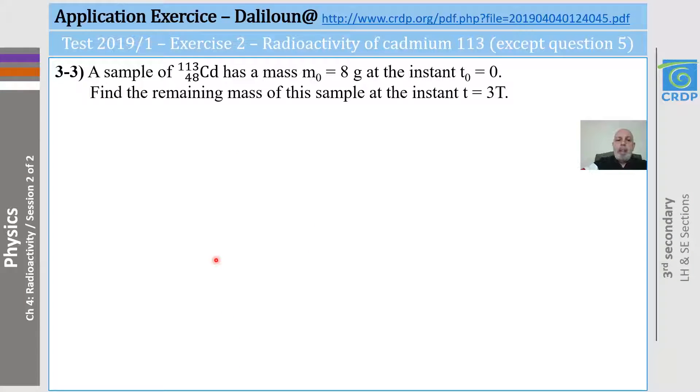Now, a sample of CD-113 has a mass of 8 grams at t0 equals 0. Find the remaining mass of the sample after 3 periods. Okay, this is the initial mass. After one period, it will become 4 grams. So, the remaining mass will be 4 grams. Then, after another period, the remaining mass will be 2 grams. Then, after a third period, the remaining mass will be 1 gram. You always divide by 2. Hence, the remaining mass after 3t is 1 gram, and this is the answer.